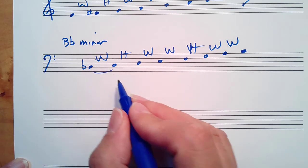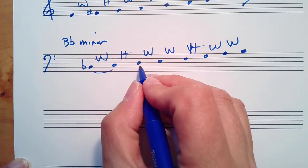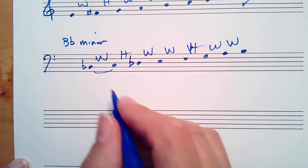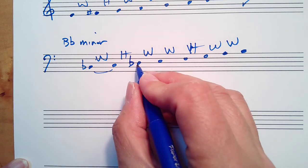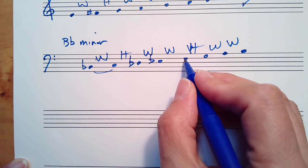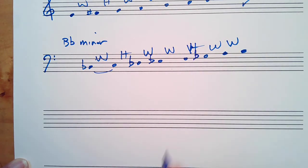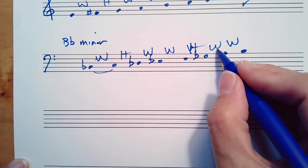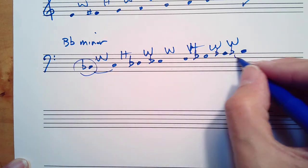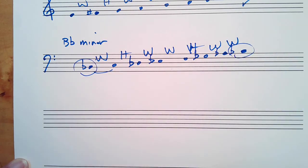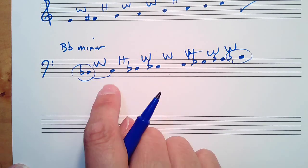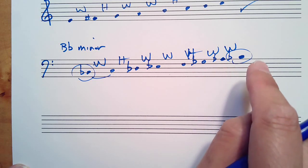So now, B flat to C is a whole step. C to D is a whole step and needs to be a half step, so we have to bring the D closer. We need a D flat. We go up a whole step from there to E flat. Whole step up is F. Half step up from F is G flat. Whole step up from G flat is A flat. Whole step up from there is B flat. First note and last note check out, so this is potentially correct. And this is the proper answer: B flat, C, D flat, E flat, F, G flat, A flat, B flat.